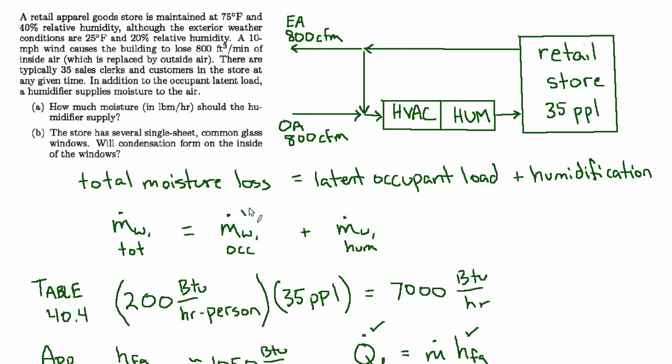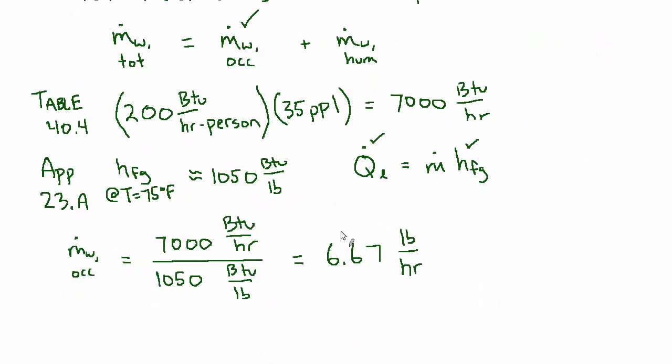Now we're going to find the total, and however much is not generated by the occupants, the rest will have to be done by the humidification. So let's find out the total moisture loss.